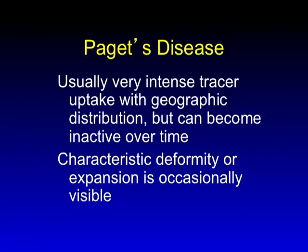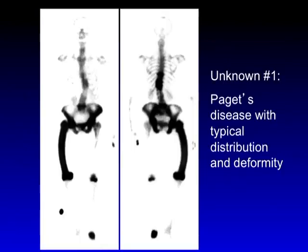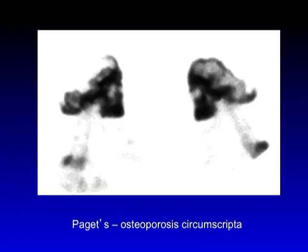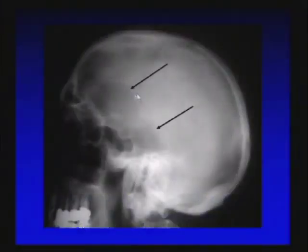Paget's disease usually presents as very intense uptake, starts at one end of the bone, moves contiguously with no skip lesions, with typical zones of involvement. You may have deformity. Here's our first unknown — this is Paget's disease. You've got a shepherd's crook deformity of the right femur, a blade of grass on the left, and characteristic zones of involvement. This is easy Paget's disease. Here we also have a patient with osteoporosis circumscripta — note the intense uptake in the facial bones, the anterior skull, and that sharp zone of transition between the abnormal and the normal. The abnormal here is lytic, a reminder that it doesn't matter whether it's lytic or blastic; what matters is that there's bone turnover.